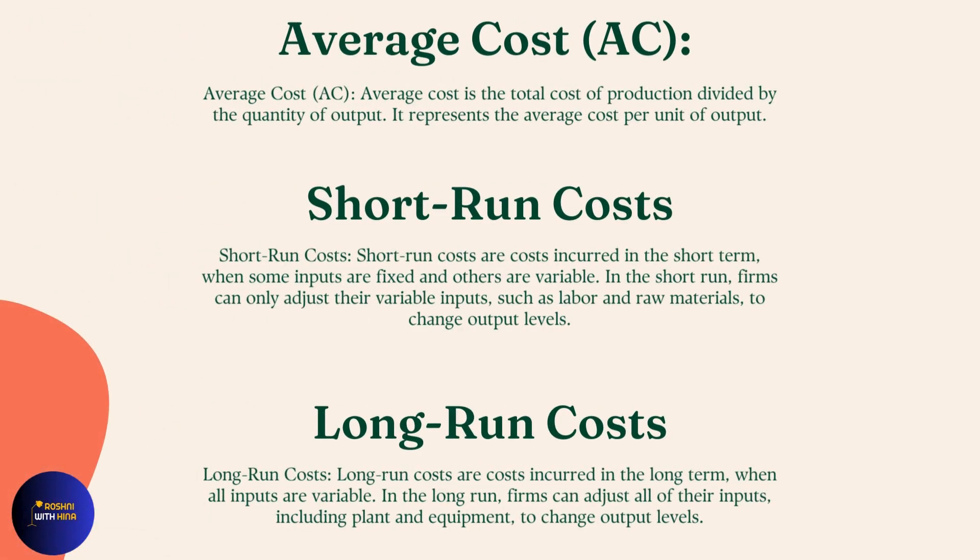Average Cost, abbreviated as AC. Average cost is the total cost of production divided by the quantity of output. It represents the average cost per unit of output.